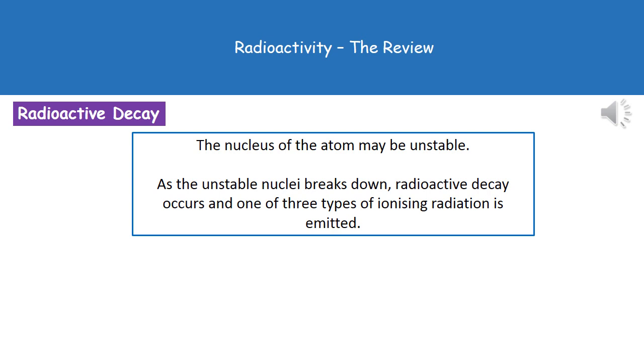What we may find is that the nucleus of our atom is actually unstable. Anytime we've got an unstable nucleus, it's going to break down. And we get radioactive decay occurring. As that radioactive decay occurs, we get one of three types of ionizing radiation being emitted or released.